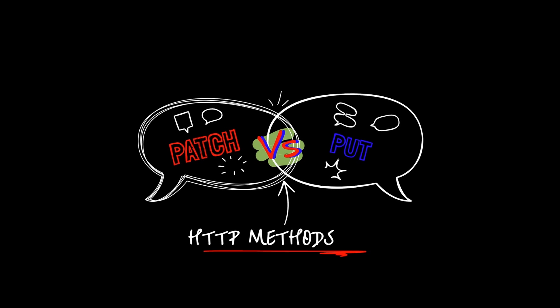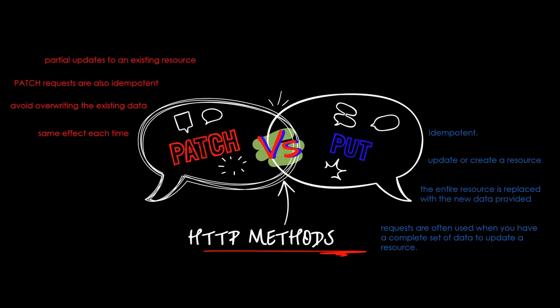The PUT method is used to update or create a resource at a specific URL. When a client sends a PUT request, it typically includes the entire updated representation of the resource in the request body. This means that if the resource already exists, the entire resource is replaced with the new data provided. PUT requests are idempotent, meaning that sending the same PUT request multiple times will have the same outcome each time. PUT requests are often used when you have a complete set of data to update a resource.